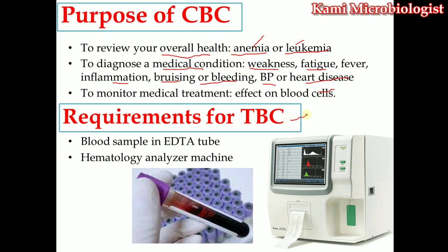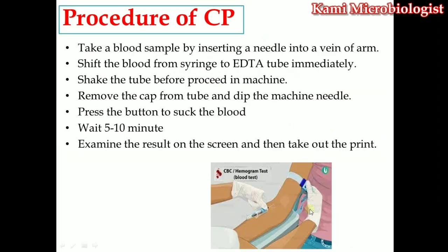For the CBC or TBC test, note that the CBC contains a lot of parameters. Due to the hematology analyzer machine, which is a fully automated machine, it can give you a report quickly — in five to ten minutes it can give you all the parameters mentioned in the CBC. It can also give you a graph. For the CBC, we need blood in an EDTA tube, and we also need the hematology analyzer machine.